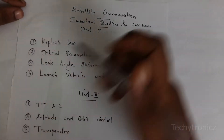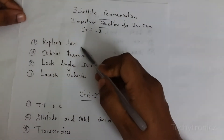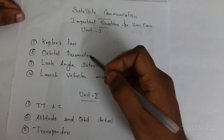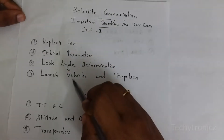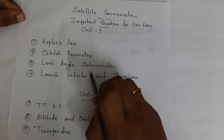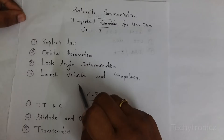In unit 1 you have to learn Kepler's law, orbital parameters, look angle determination, and the fourth question is launch vehicles and propulsion.